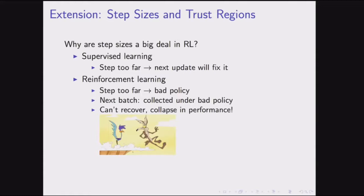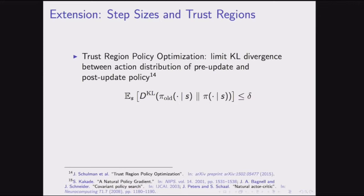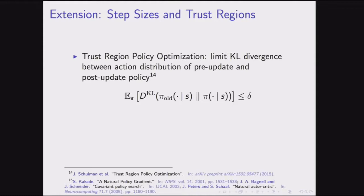One way to fix this is to stop the policy from taking too big a step. You can look at the KL divergence between the old and new policy — before and after the update — and make sure the distributions aren't too different. My colleagues and I developed Trust Region Policy Optimization (TRPO), which looks at action distributions and tries to ensure the KL divergence isn't too large. This is closely related to previous natural policy gradient methods, which do something similar but usually without a hard constraint on KL divergence.